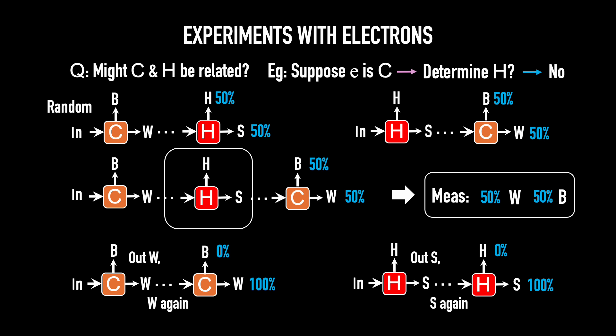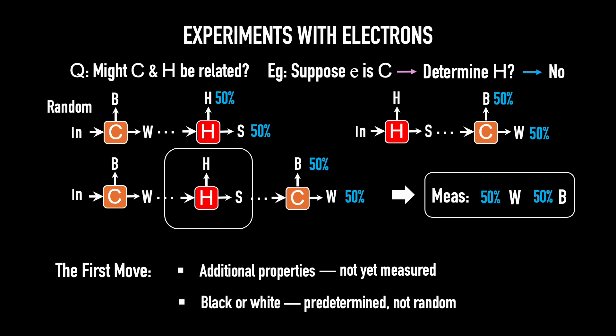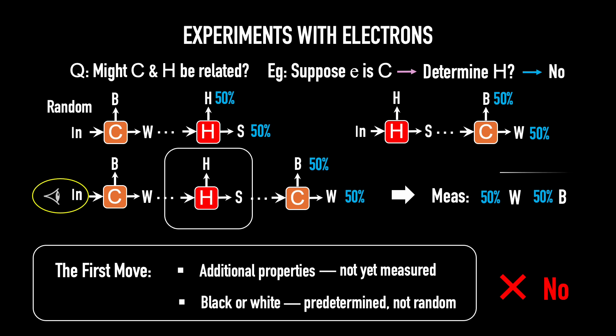So this is suspicious. Here's the first natural move. Surely there's some additional property of the electron that we just haven't measured yet that determines whether it comes out the second color box black or white. There's got to be some property that determines this. And so people have spent a tremendous amount of time and energy looking at these initial electrons and looking with great care to see whether there's any sort of feature of these incident electrons which determines which port they come out of. And the shocker is, no one's ever found such a property. No one has ever found a property which determines which port it comes out of. As far as we can tell, it is completely random.